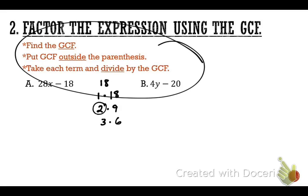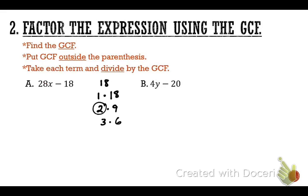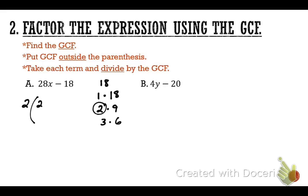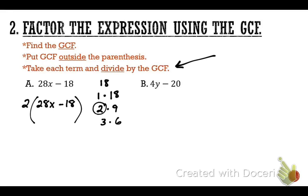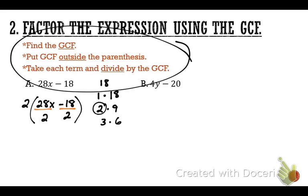Now use the instructions. We found the GCF of 2 and we put it outside the parentheses. Rewriting the original problem: 28x minus 18. Drop the 2 down on the outside. Now take each term and divide by the GCF. 28x divided by 2, and negative 18 divided by 2.